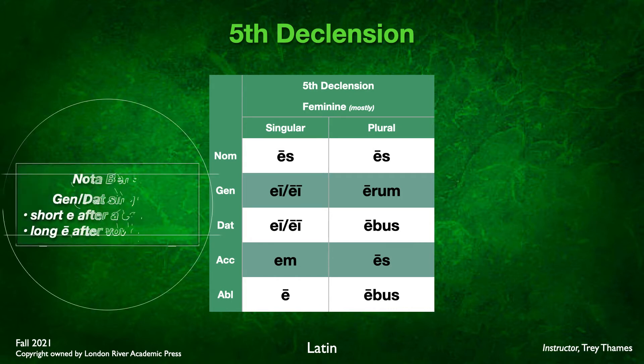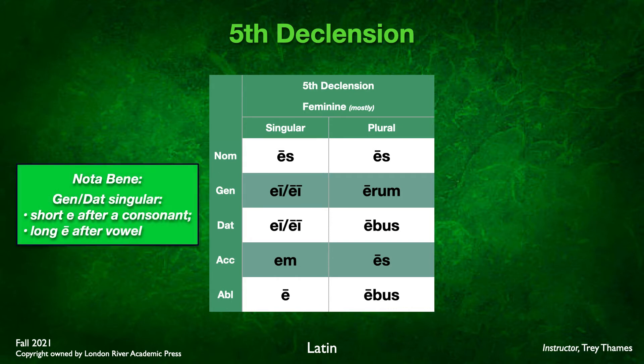Nota bene: in the genitive and dative singular there are two forms — a short e when it is following a consonant, or if it's after a vowel, it's going to be a long e with a macron. I'll show you an example of that in just a second.